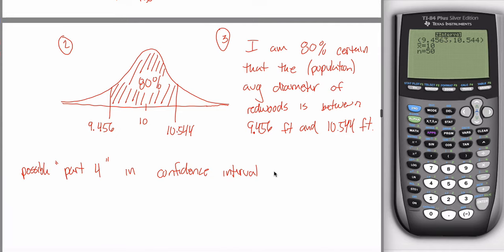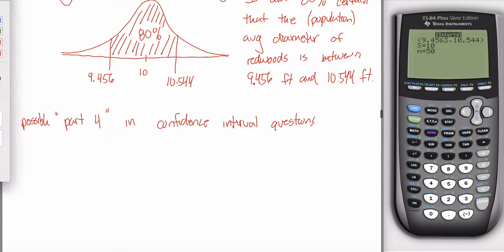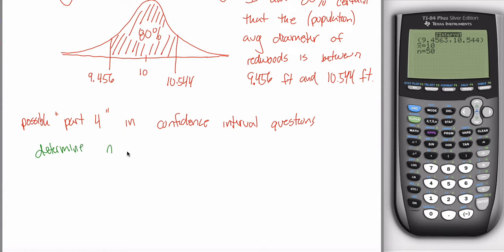So: possible part four in confidence interval questions. In short, what you do is you are going to determine n for a given margin of error. Let me define some words for you.